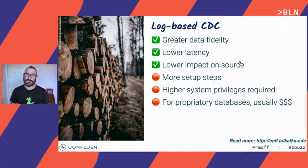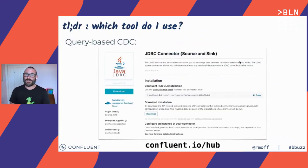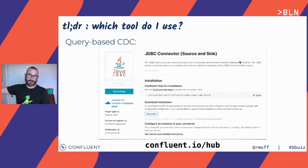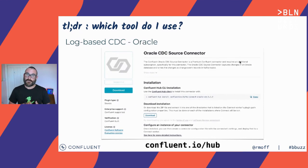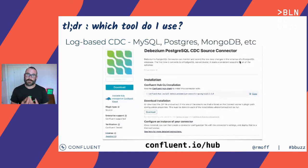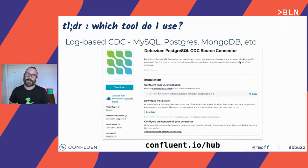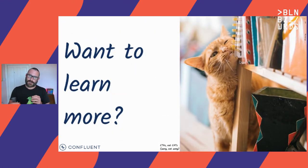Having decided which approach to use, let's look at the available tools. Query-based CDC is provided by the JDBC connector — you can find it on Confluent Hub among all the different Kafka Connect connectors. The JDBC connector lets you do query-based CDC against your source database. For log-based CDC, there's the Oracle CDC connector from Confluent, and for MySQL, Postgres, and other databases, there's the Debezium project which provides excellent connectors. Gunnar, who is Project Lead on Debezium, and Hans-Peter both work with it. Those are the key tools for getting data out of databases into Kafka.